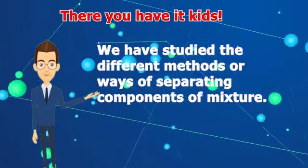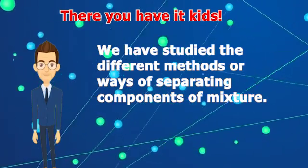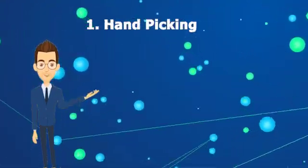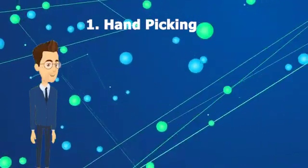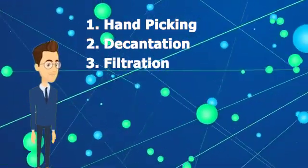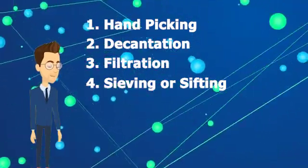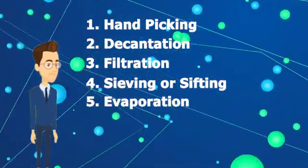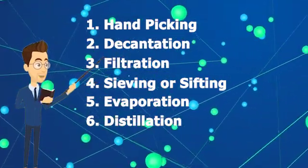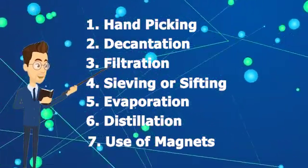There you have it, kids! We have studied the different methods or ways of separating components of mixtures. Are you ready for the recap? Number one: hand picking. Number two: decantation. Number three: filtration. Number four: sieving or sifting. Number five: evaporation. Number six: distillation. And number seven: use of magnets.